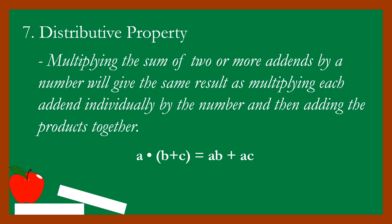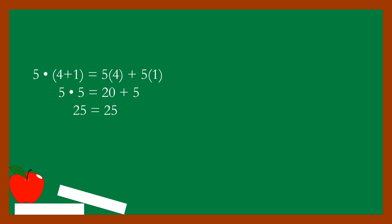For example: five multiplied by the sum of four and one. Simplifying: four plus one equals five, and five times five equals twenty-five. Using the distributive property, we distribute: five times four plus five times one, which gives twenty plus five, and the final answer is also twenty-five. Both methods give the same result.